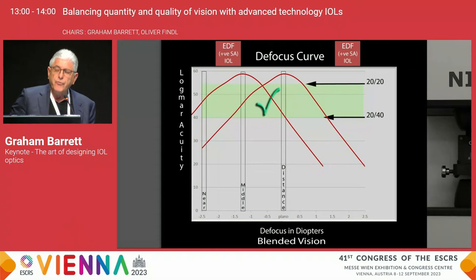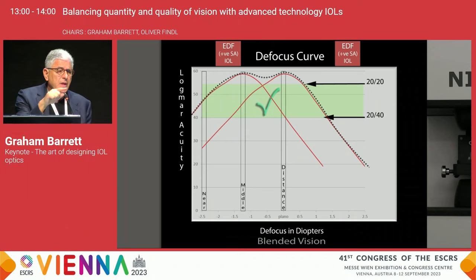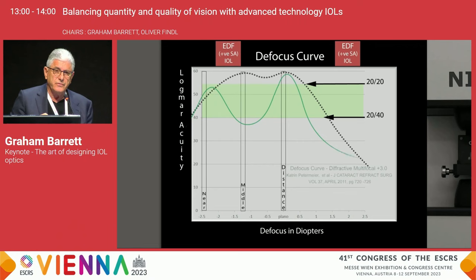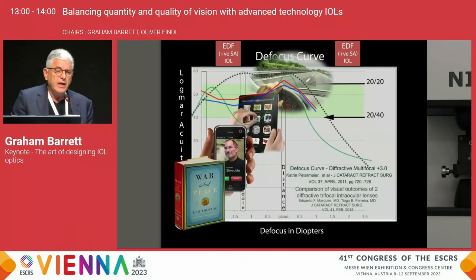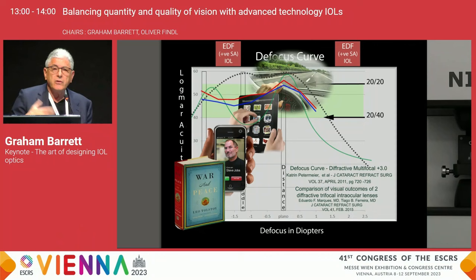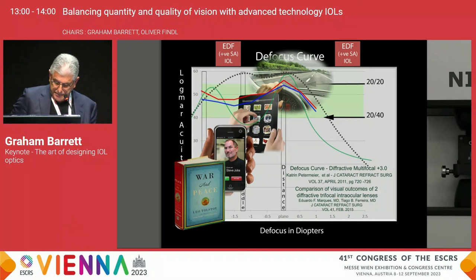Comparing actual data from patients implanted some years ago, the bilateral defocus curve using this lens is quite distinct from the defocus curve of a diffractive bifocal optic, and different again from a trifocal optic. The biggest difference is intermediate vision, which is really excellent in the extended depth of focus IOL. A lot of our activities today are more intermediate-based — digital media, rather than reading small print as in years gone by.